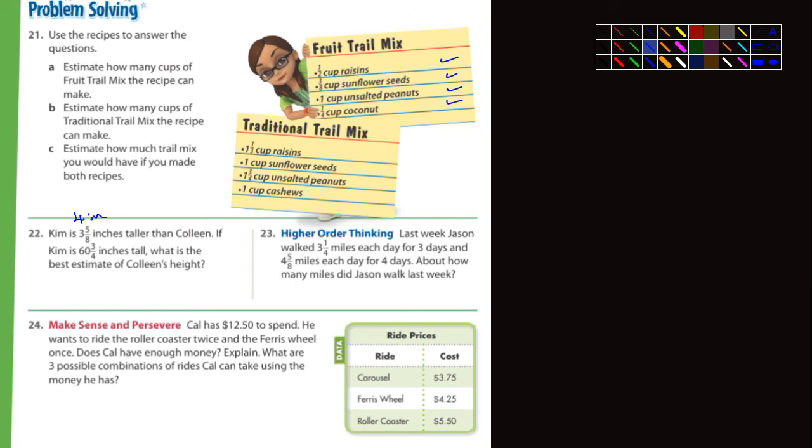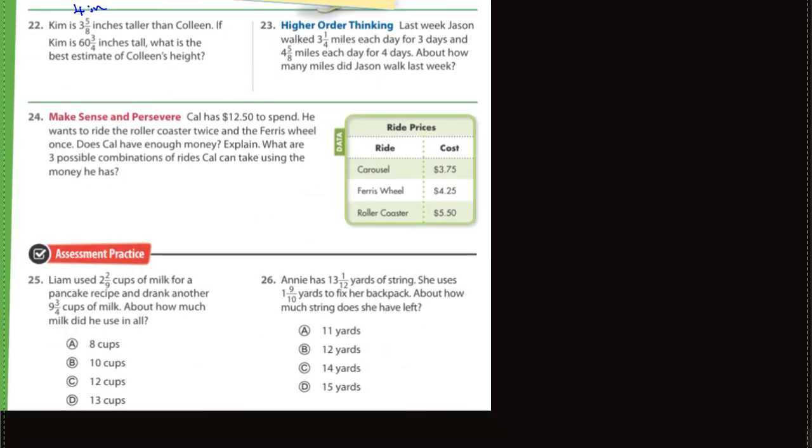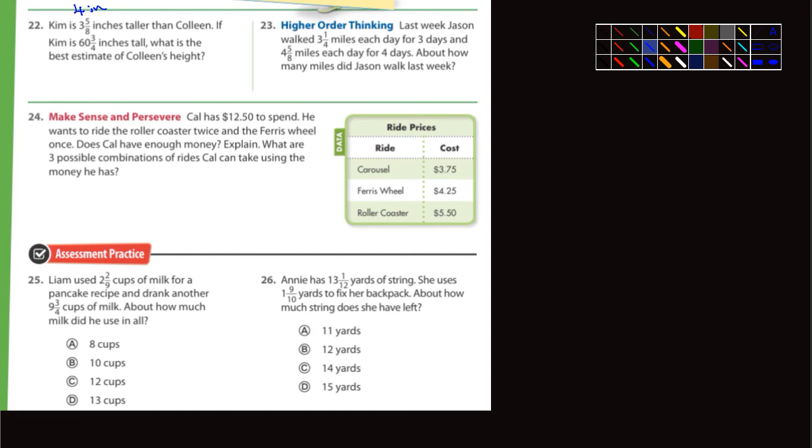Let's see here. You could do 23. How about 24? Cal has $12.50 to spend. He wants to ride the roller coaster twice and the Ferris wheel once. Does he have enough money? Well, so there's the cost of the Ferris wheel. There's the cost of the roller coaster. And the roller coaster is going on twice, and the Ferris wheel looks like just once. Yeah, you guys could do that. And then 25 and 26 looks like it's multiple choice. You can do that. Okay, that's it, you guys. And we will grade this on Tuesday morning. Talk to you later.